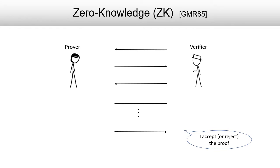Now one of the most beautiful consequences of allowing interaction was that it enabled zero knowledge. This concept was introduced in a seminal work of Goldwasser, Micali, and Rackoff, and allowed for the construction of interactive proofs that revealed no secrets to the verifier. The only information the verifier learned from such a proof was whether or not the prover's claim was true, and no associated secrets that the prover held would potentially be leaked to the verifier.